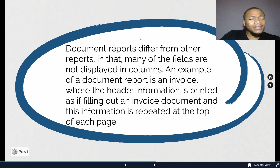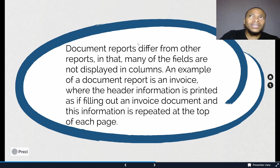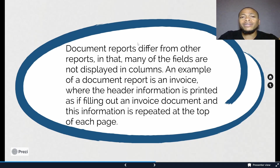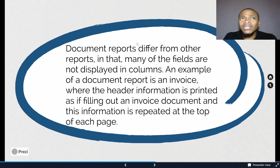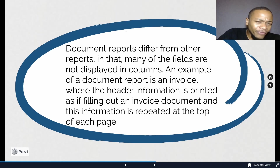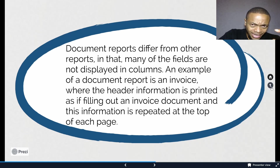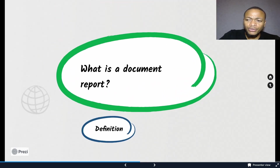Document reports will mostly have only one header item. For example, for sales invoice number one, you'll only have a document report for that particular sales invoice. You click it from mostly either the list page or the card page and it will filter to that particular header item. That's a document report.